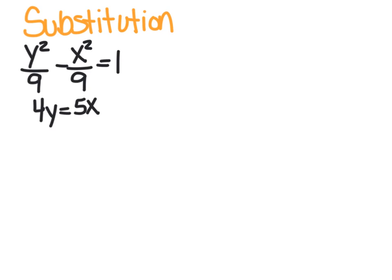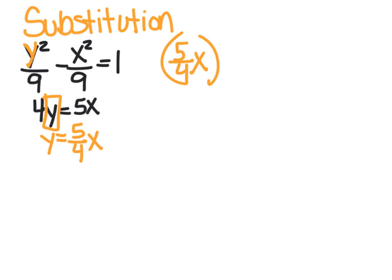Now we're going to try the substitution method. I've got two conics here — you're used to seeing parabolas, but this is actually a hyperbola. It doesn't matter what kind of conic we use — it's all squared, so it's all the same process. In substitution, you always want to isolate a variable and then plug it into the other equation. I'm going to isolate y in the second equation because it's really simple: y equals 5 fourths x. And then I plug it in for y in the first equation. So I now have 5 fourths x all squared over 9 minus x squared over 9 equals 1.